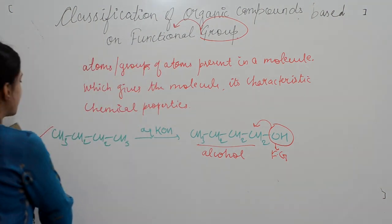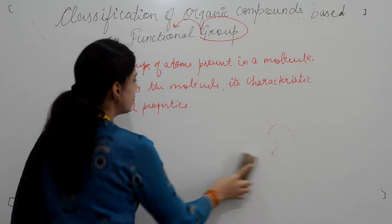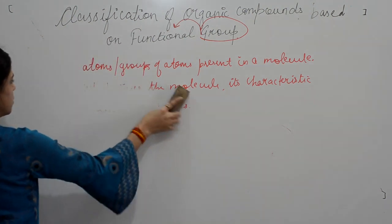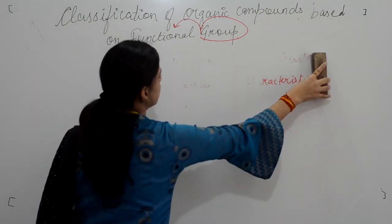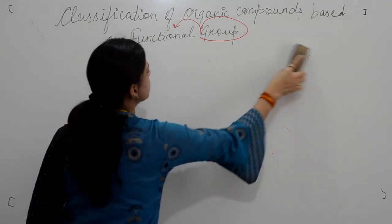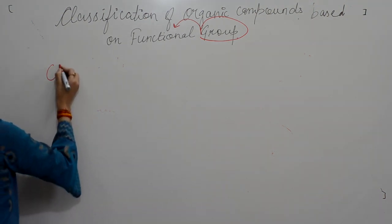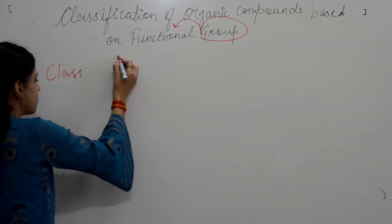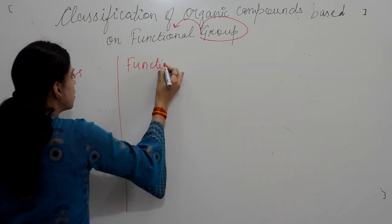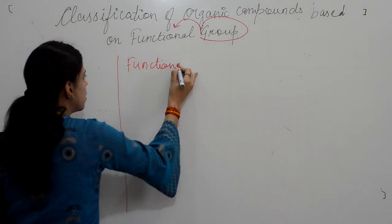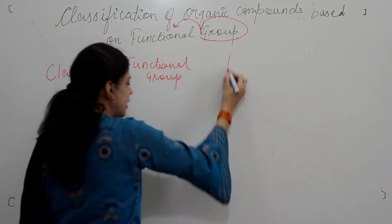With the presence of this OH group, which is the functional group, the chemical properties — that is, its reactivity and stability — will be different from butane. That is why the functional group is very important in organic chemistry. Now we will see the different types of functional groups.